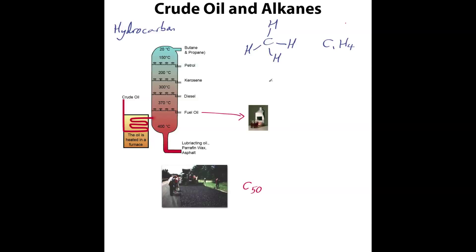The next alkane in the list has got two carbons — that's basically how we classify these hydrocarbons, by counting the number of carbons present. So the next one is C2. Carbon likes to have four bonds, and when we add another carbon we connect carbon to carbon forming a carbon chain. If we count the hydrogens, we've got three on each carbon, so this is C2H6.